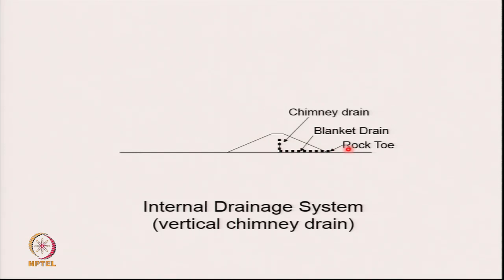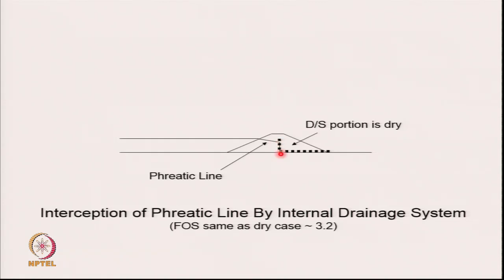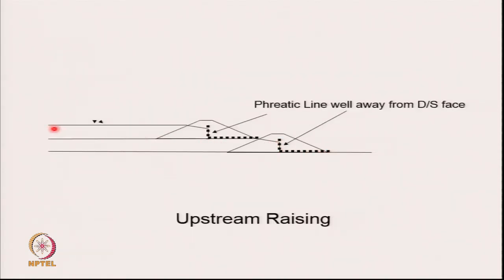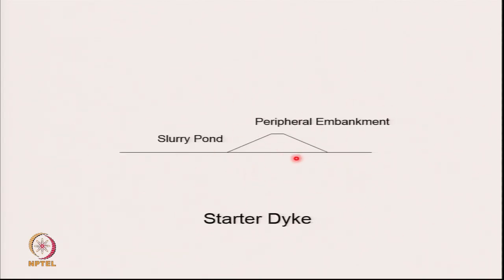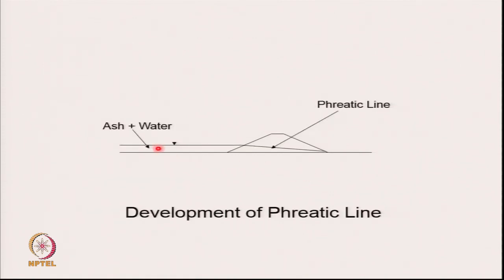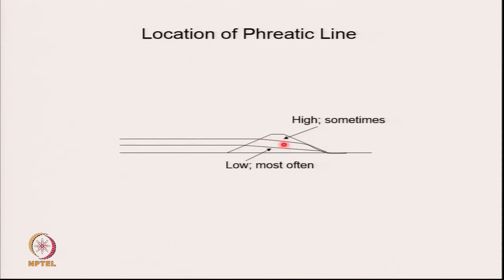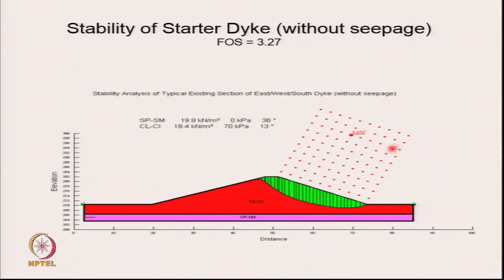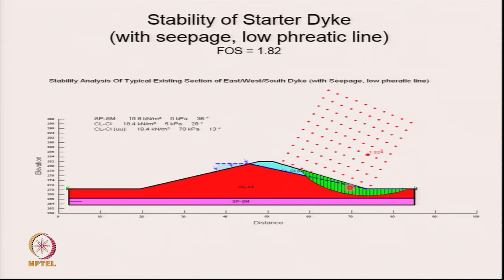You have a chimney drain, a blanket drain, and a rock toe. When the water level is high it should be caught by these drains. For a peripheral embankment without a vertical chimney drain and horizontal blanket drain, doing a stability analysis: a starter dike of local soil without seepage may have a factor of safety of 3.27. When the phreatic line is low, factor of safety is around 1.82 - still above 1.5. However, when the phreatic line is high and meets the downstream face, factor of safety drops to 1.1.